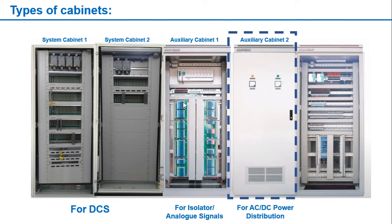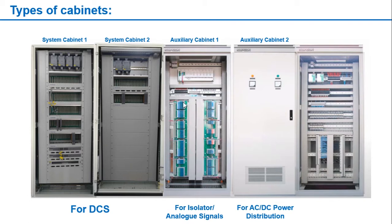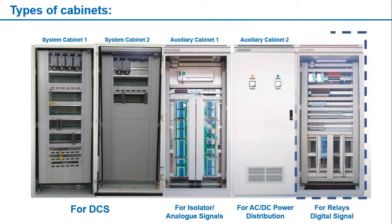The next panel is the power control panel, in which we normally handle AC/DC power distribution for the auxiliary and system cabinets. The last panel is the relay panel, named auxiliary cabinet 3. This panel contains relays and TVS diodes for the field wiring of digital signals.